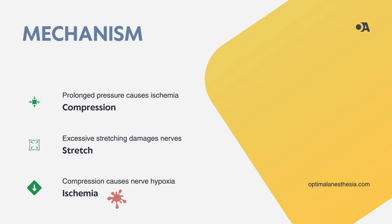We'll be discussing the three main mechanisms behind these injuries: compression, stretch, and ischemia. During a long surgical procedure, a patient's arm or leg might be in one position for an extended period. If there isn't enough padding, or if the positioning isn't quite right, pressure builds up on the nerves. This pressure reduces blood flow, causing the nerve to become oxygen-starved and damaged.